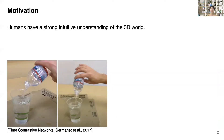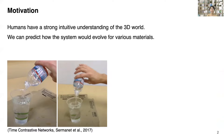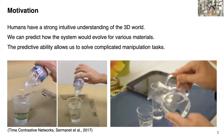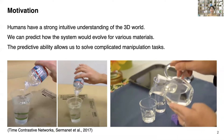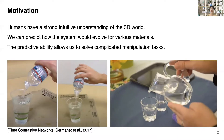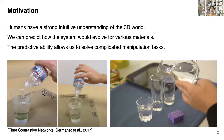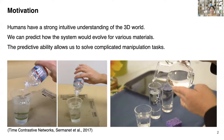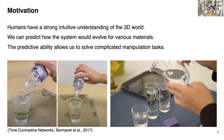Humans have a strong intuitive understanding of the 3D world. When we see the same action from different viewpoints, we know they depict the same underlying content. We can also predict how the system would evolve for various materials, allowing us to solve complicated manipulation tasks involving fluids and containers of different shapes. These abilities are adaptable in a wide range of environments and go far beyond the reach of current robots.